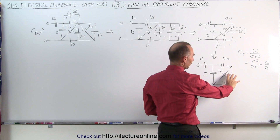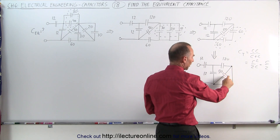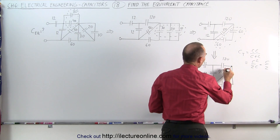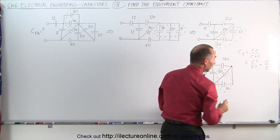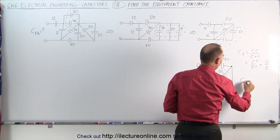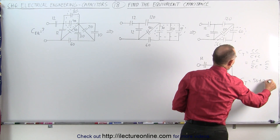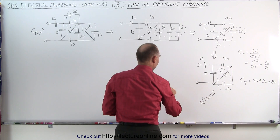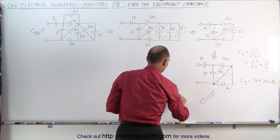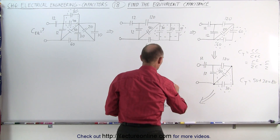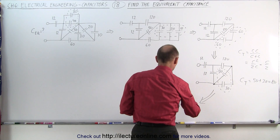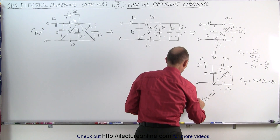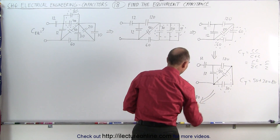Notice that these are on two separate branches — going from this point to this point, they are in parallel, which means we can combine those. When capacitors are in parallel, we simply add them together. C total in this case is simply 50 plus 30, which is 80. We now have the 12 and 12 microfarad capacitors, the 120 microfarad capacitor, and now the 50 plus 30 together form an 80 microfarad capacitor.